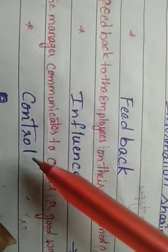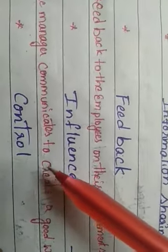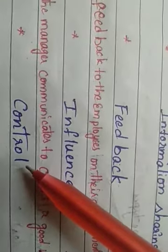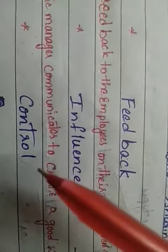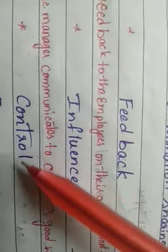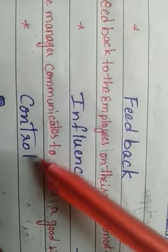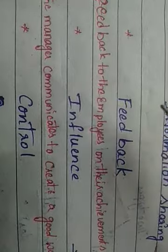The next scope is control. Control means it is one of the scopes of business communication — to control what your goals are, what your achievements are, and to work on purpose only. So the manager can control their employees and share information so they stay focused on that work only.